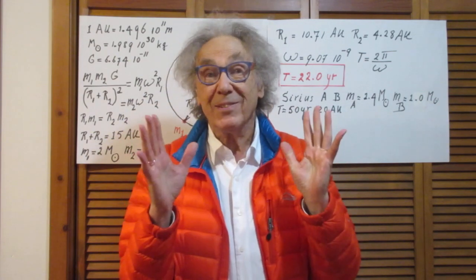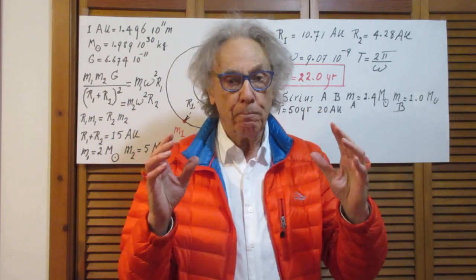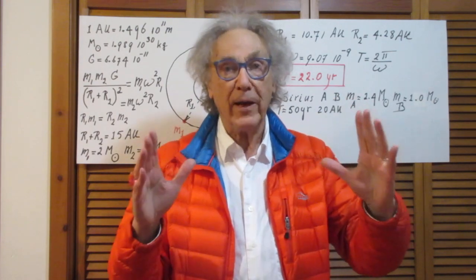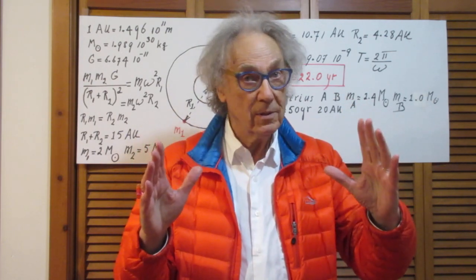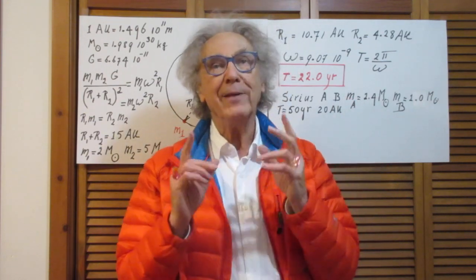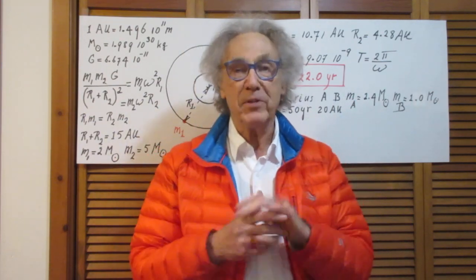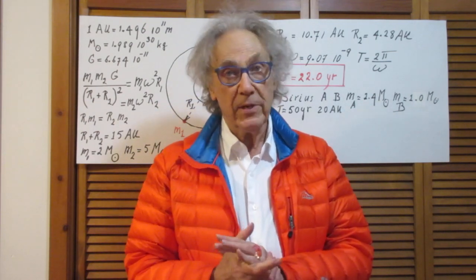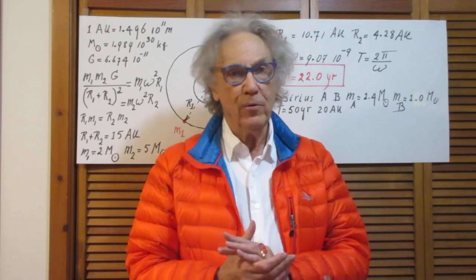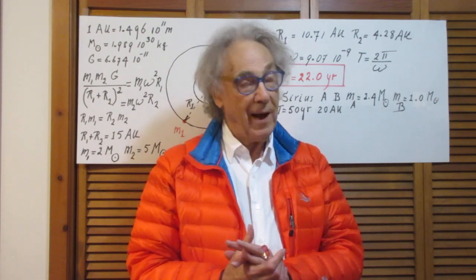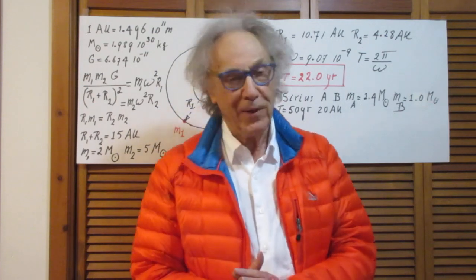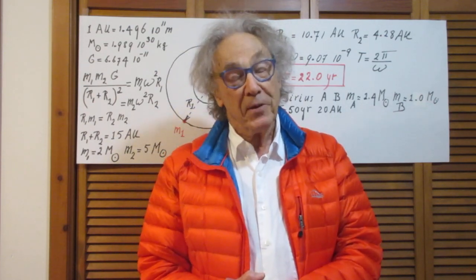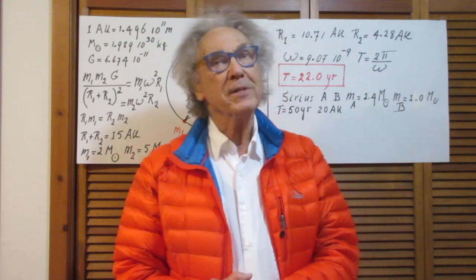There are many systems in the sky that are binary star systems. An enormous fraction of all stars are binary star systems. I want to highlight one very famous system: it is the brightest star in the sky, Sirius A. All of you have seen Sirius A, I would imagine, unless you live at the North Pole. Sirius A is a binary star system.